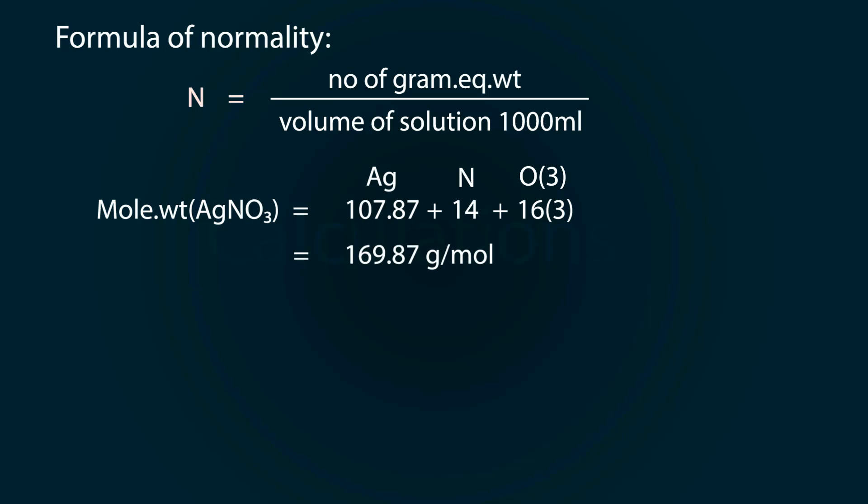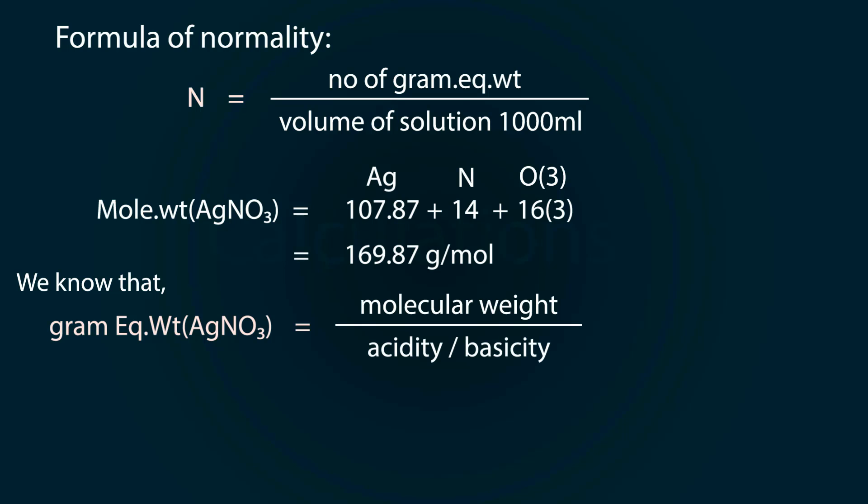So we get our molecular weight as 169.87 grams per mol. We also know that gram equivalent weight of silver nitrate is equal to molecular weight divided by acidity or basicity. So the equivalent weight of silver nitrate will be equal to 169.87 divided by 1. 1 is the acidity of silver nitrate.